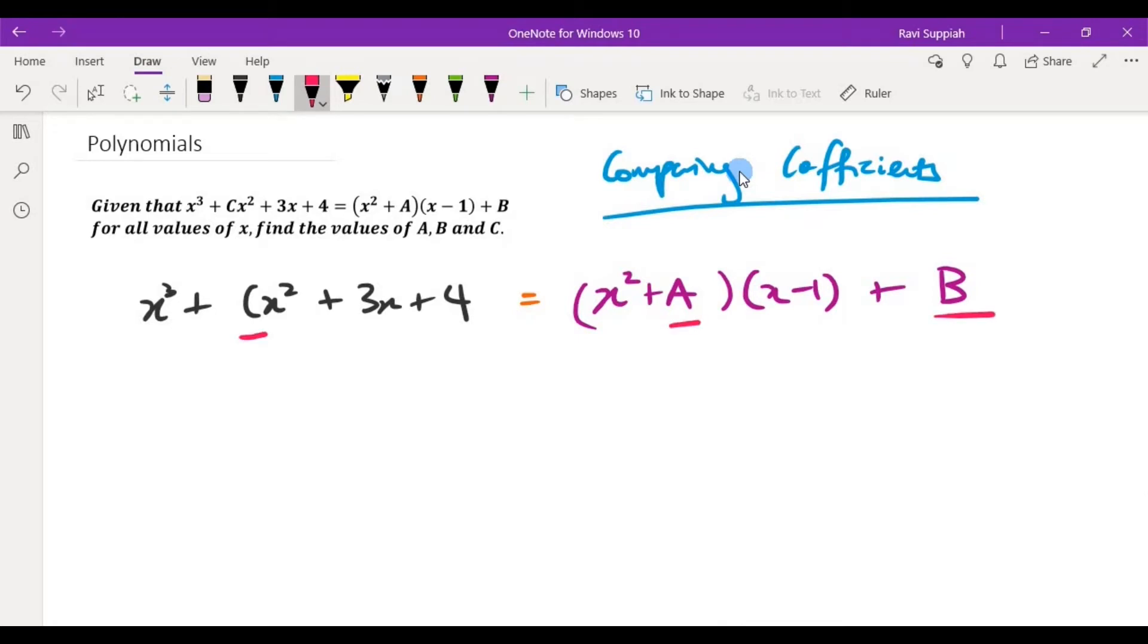In order for me to solve for these three unknowns, what I need to do is to compare coefficients on both sides of the equation. When I say that the left hand side equals the right hand side, it means that the x cubed terms are the same, x squared terms are the same, and so on. That is what we mean by comparing coefficients.